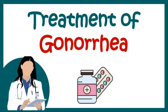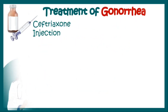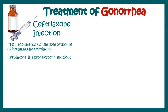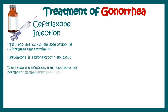Once Neisseria gonorrhoeae is diagnosed, treatment includes ceftriaxone injection. The CDC recommends a single dose of 500 mg of intramuscular ceftriaxone for gonorrhea. Ceftriaxone is a cephalosporin antibiotic that will stop the infection, but it will not repair any permanent damages caused by the disease.